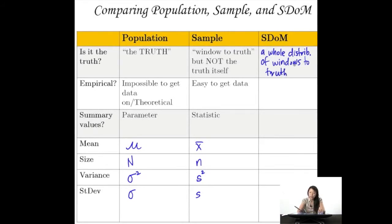Right? So although it's not the truth itself, it helps us interpret this sample. Because it's a whole bunch of windows to the truth, and you could sort of see where does this sample fit in to this sampling distribution of the mean? We don't get data on it. It's not empirical. It is theoretical. Right? It's still a theoretical distribution, but we could easily generate it because of the CLT.